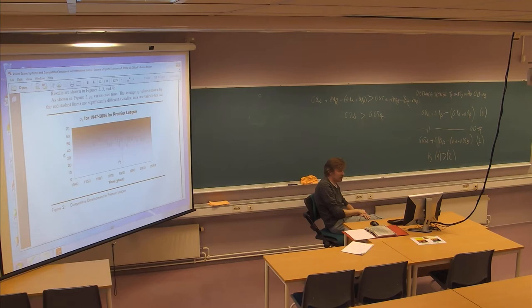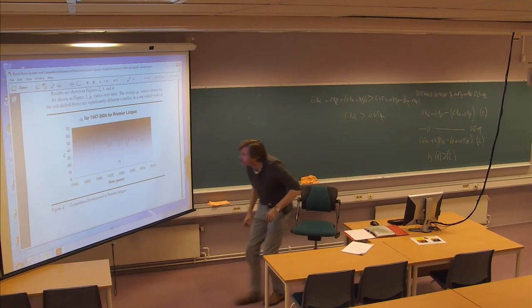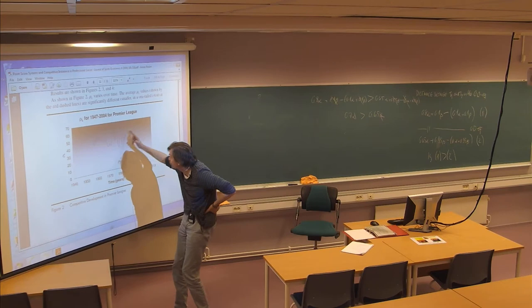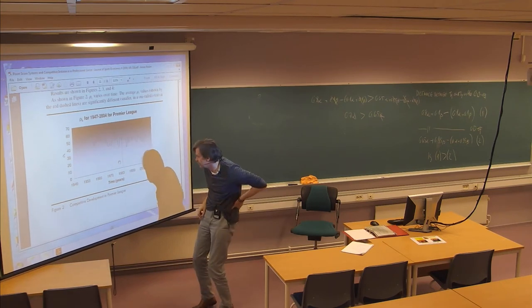And here you see the development of this row L for Premier League, all the way back from 1947 up until 2004. Here is the 2-1-0 system, and here was the introduction of the 3-1-0 system in around 1981 it seems, maybe 82.